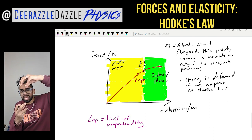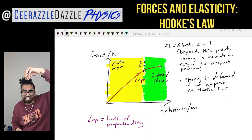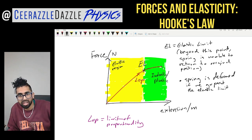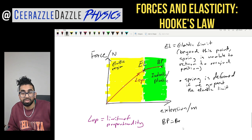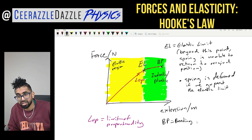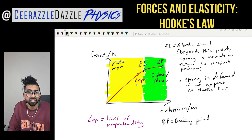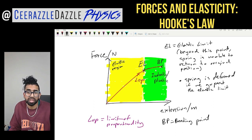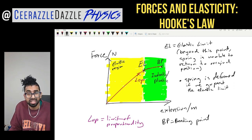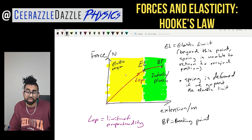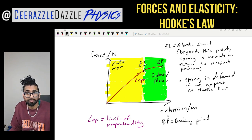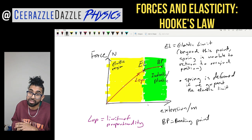If you keep adding force beyond the elastic limit, eventually you reach the breaking point (BP) — the last point on the graph where the spring snaps. Exam tip: make sure you know the order — limit of proportionality first, then elastic limit, then breaking point. Also be able to identify the elastic and inelastic regions. That's it for this session — hit like and subscribe, and good luck in your studies!